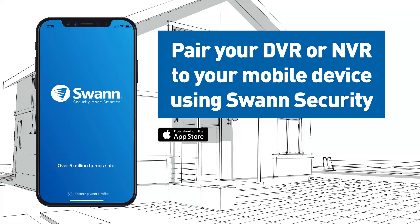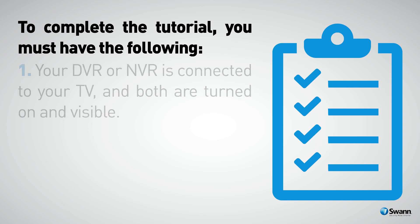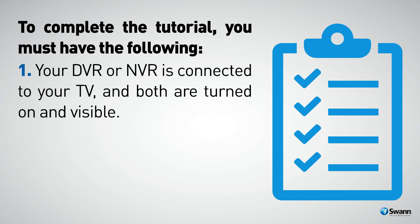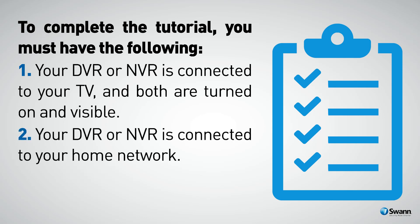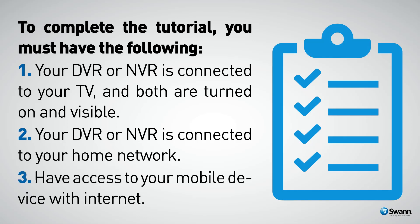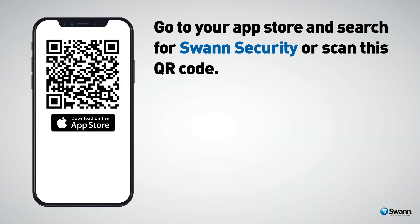Pair your DVR or NVR to your mobile device using the Swan Security app. To complete the tutorial you must have the following: your DVR or NVR is connected to your TV and both are turned on and visible, your DVR or NVR is connected to your home network, and access to your mobile device with internet. Go to your app store and search for Swan Security, or pause the video and scan this QR code.